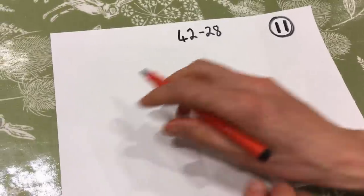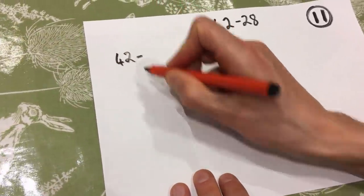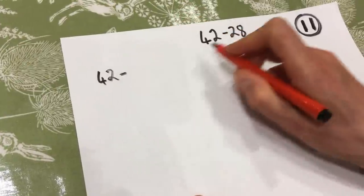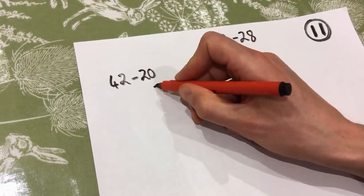Okay. Well, let's have a look at some of the things that you could have done. So again, this one I find quite difficult, but if we're doing it by subtracting the different parts, I could take away a part of 20 and that leaves me with 22.